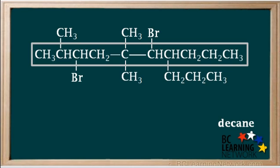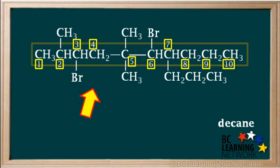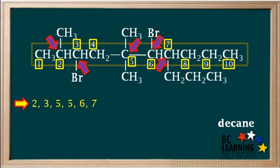Now we need to find the best way to number the carbon atoms to get the lowest possible combination of numbers in the name. If we number from the left side starting with one, you'll see that we have groups attached to carbons 2, 3, 5, 6, and 7. Since we have two groups attached to carbon 5, we include 5 twice in the list, giving the combination 2, 3, 5, 5, 6, 7.